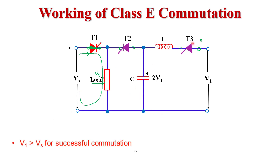Now we turn on thyristor T3 by applying a gate triggering pulse to it. When T3 turns on, it behaves like a short circuit and current flows from V1 through T3, through the inductor, through the capacitor, and back to the voltage source. As current flows through the inductor, it stores some charge. The polarity across the inductor at this time is positive on the right terminal and negative on the left terminal.